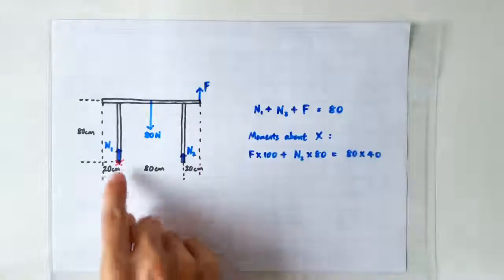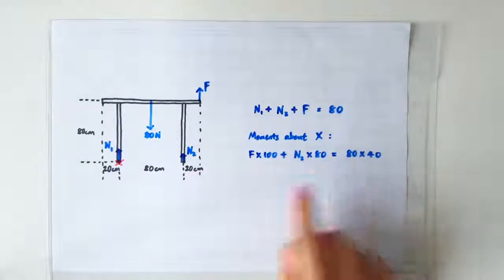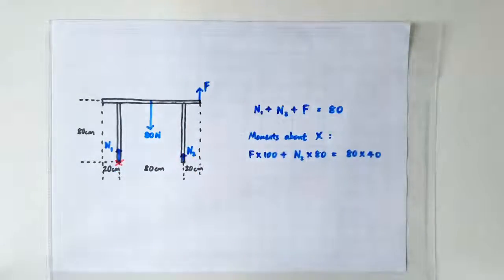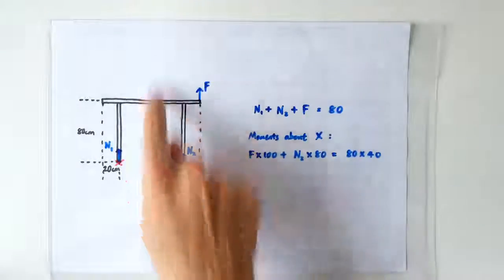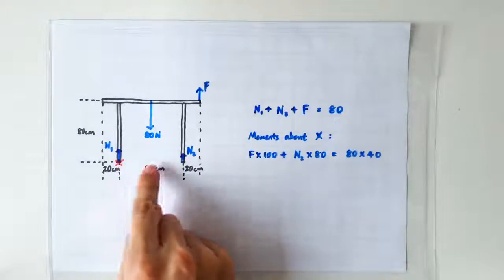So these two anti-clockwise moments are balanced by the clockwise moment provided by this 80 newtons here. So 80 newtons times 40 cm.